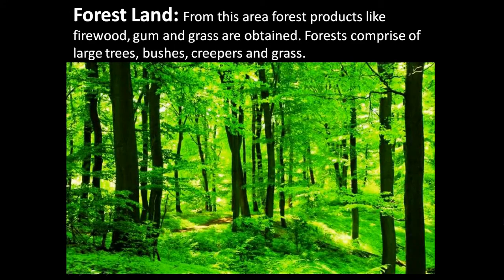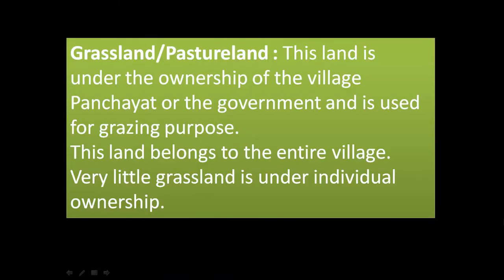Next is forest land. From this area, forest products like firewood, gum, and grass are obtained. Forests comprise large trees, bushes, creepers, and grass. Next is grassland or pasture land. This land is under the ownership of the village Panchayat or the government and is used for grazing purposes. This land belongs to the entire village, and very little grassland is under individual ownership.